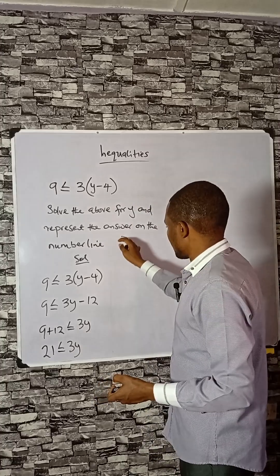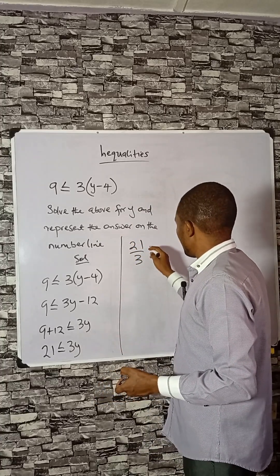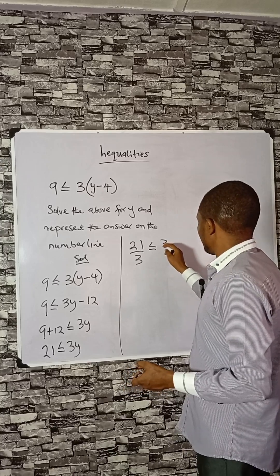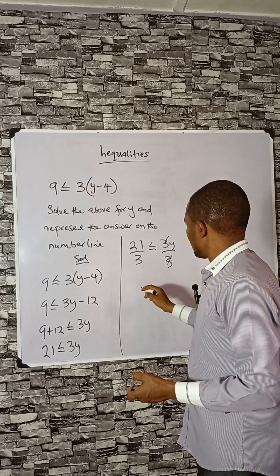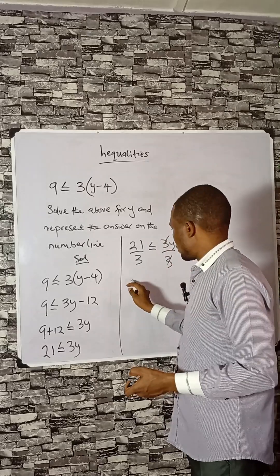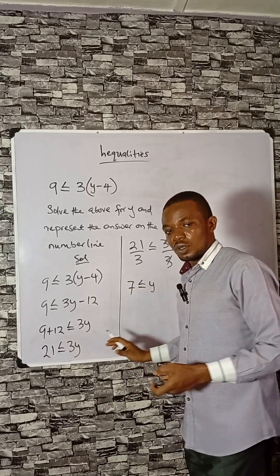To make y the subject, divide through by 3. This will give us 21 divided by 3, which is 7. So 7 is less than or equal to y, that means y is greater than or equal to 7.